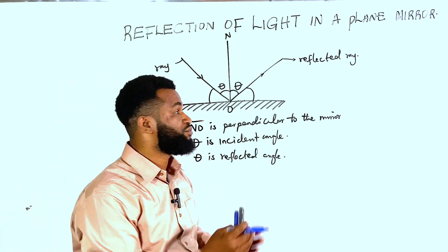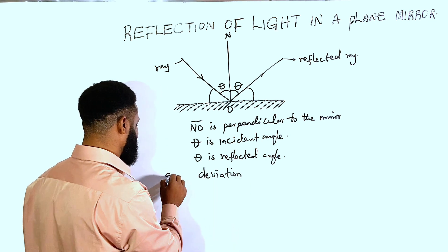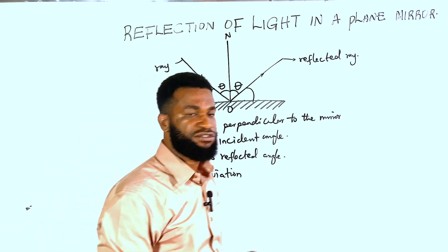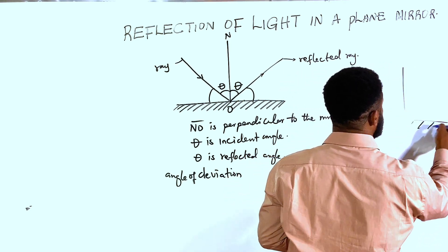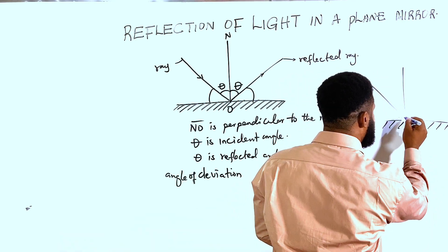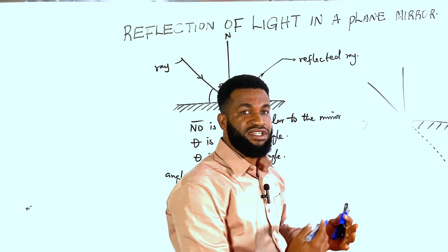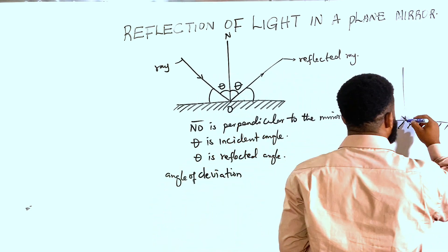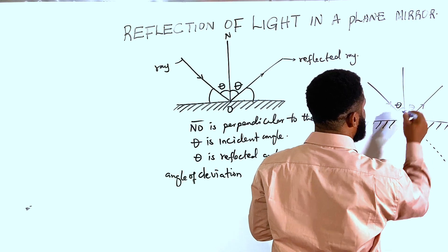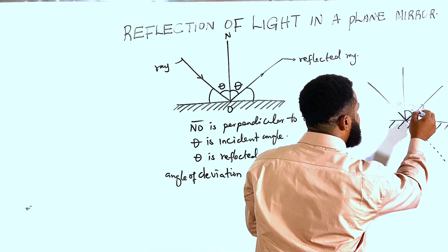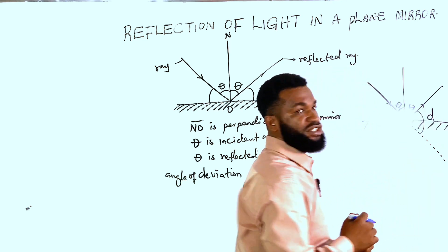At the end of this class I'm going to solve a few examples to back this up. But there is another concept we call angle of deviation. The incident ray is normally supposed to keep going straight, but because of the reflecting surface of the mirror, it deviates in another direction. The angle of deviation D is the angle from the reflected ray to the path which the incident ray was supposed to follow.